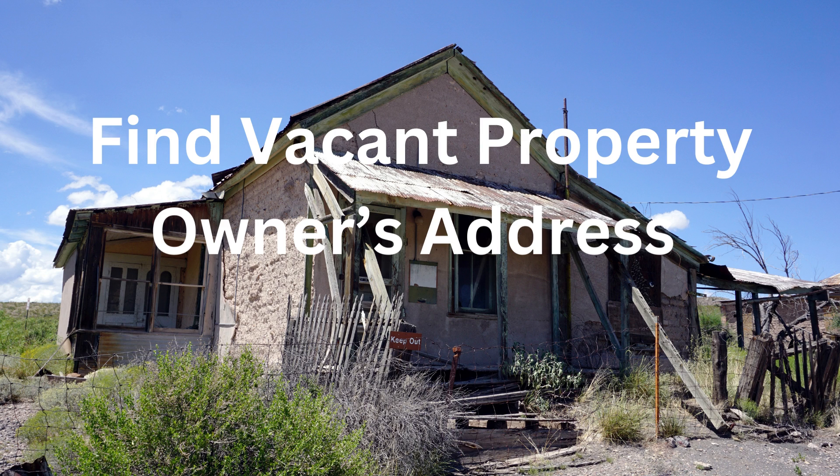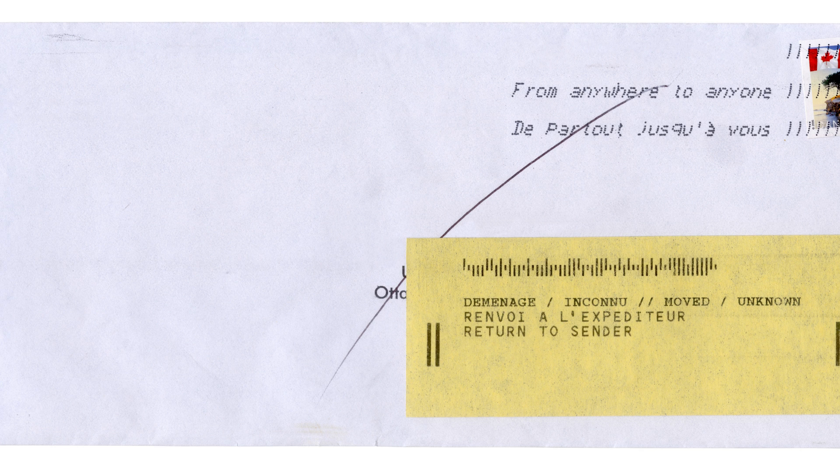Are you trying to find a property owner's address? Have you sent a letter to the information you found at the recorder's office to the property owner — because it's a vacant house and you're trying to buy that house from the owner — and the post office sends it back as undeliverable?